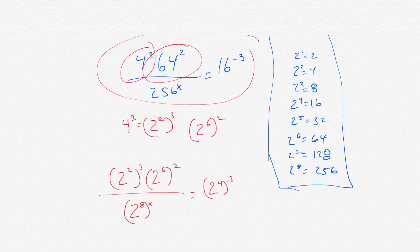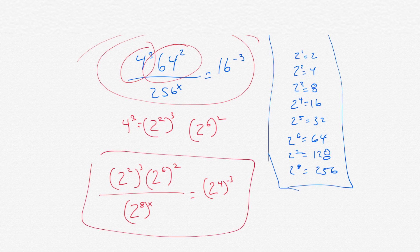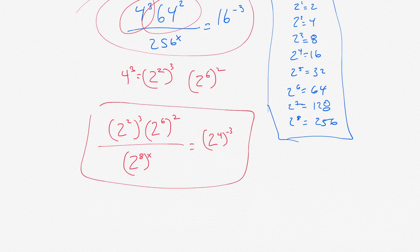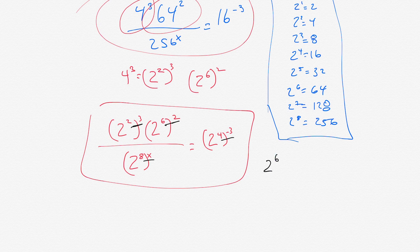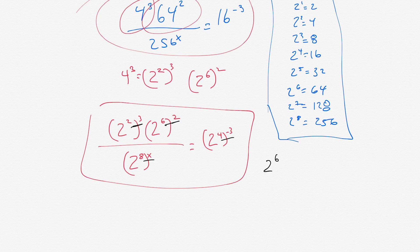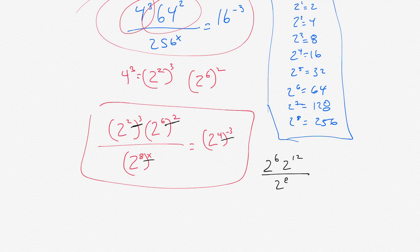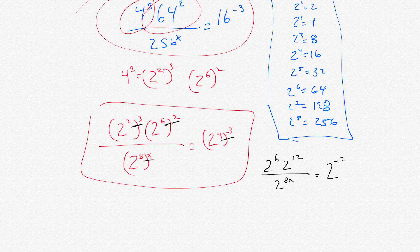So, this big equation up here can simplify all of it to the base of two. The next order of business, we'll multiply these exponents. We have 2 squared to the third. So, we multiply the 2 and the 3. We get 2 to the sixth. Then, we multiply 2 to the 6 raised to the 2. We multiply the 6 and the 2. So, we get 2 to the 12. And then, we multiply the 8 and the x. We get 2 to the 8x. And then, 4 times negative 3 is negative 12.